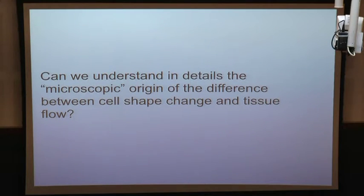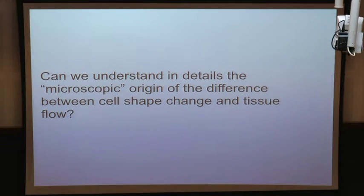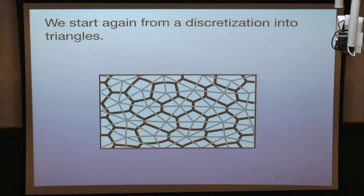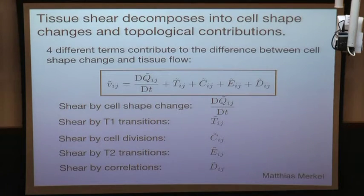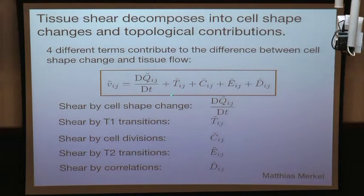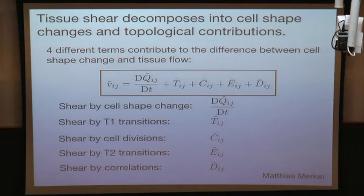This can be made mathematically exact. Starting with the dual triangulation network, one can derive an exact equation showing that tissue shear decomposes into five contributions: cell shape change, rate of T1 transitions, contribution from cell division, cell delamination, and a term called shear by correlation. These equations are exact — if you have the neighbor relations and cell positions, you can calculate all these quantities exactly.